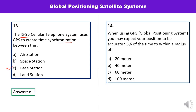Question number fourteen: When using GPS you may expect your position to be accurate 95% of the time within a radius of — 20 meters, 40 meters, 60 meters, or 100 meters? We may expect our position to be accurate 95% of the time within a radius of 100 meters. That is the correct answer.